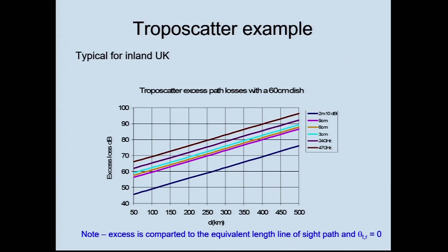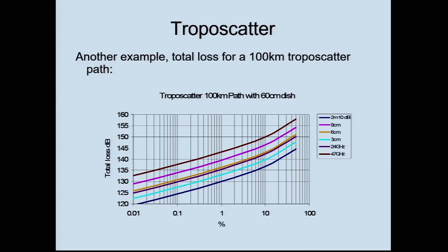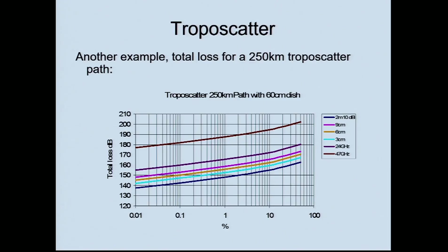That covers what I was going to say about introducing the fundamentals. Of course you don't really need to bother with any of this because there's software available which will tell you what's going to happen. This is an example of my path profile software, which gives you an idea of what the point-to-point path loss is likely to be between two points and gives you some statistics. It doesn't do real-time propagation, but there are other packages which do some real-time prediction based on weather forecasts.